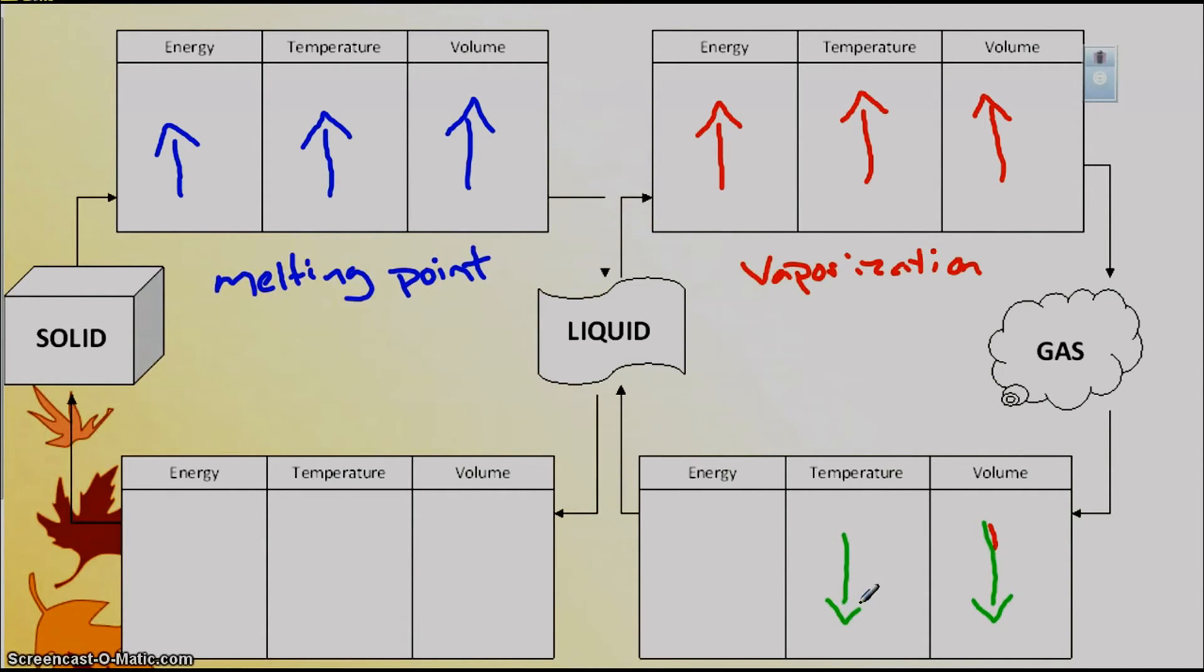We see this happen when water vapor hits the side of an ice cold glass of water. It condensates. And so that condensation on the outside of the glass, that's what's happening. The air is being cooled around it and so the water molecules come out of the air and become back into a liquid. Energy is decreasing because temperature is decreasing. We call this condensation.